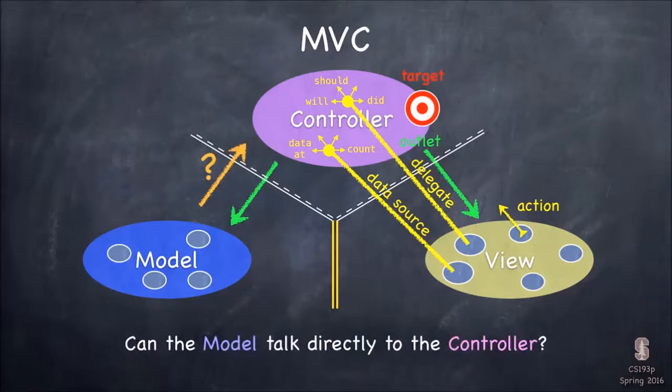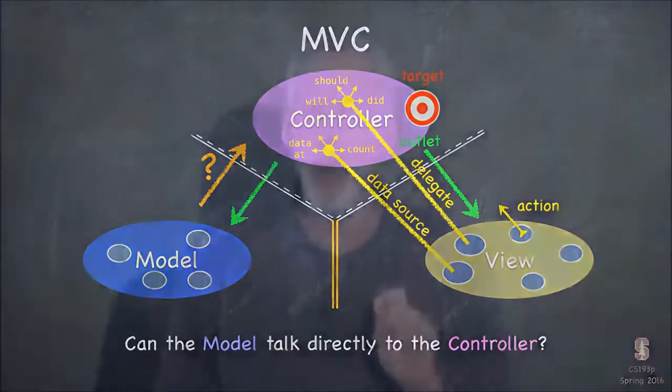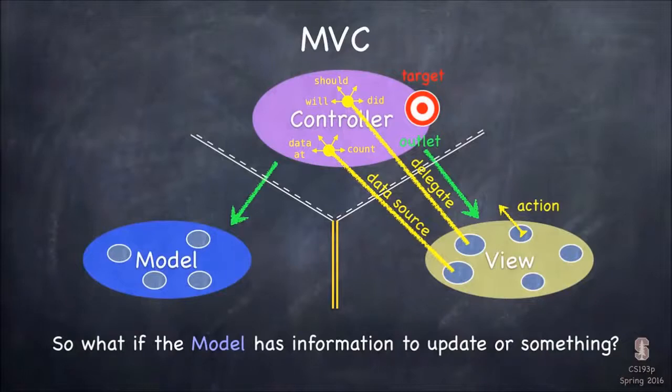How about the model? Can it talk directly to the controller? Absolutely not. Because the controller is your UI logic, and the model is UI independent. So there's absolutely no way the model could have anything to say to the controller. However, what happens if the model, which is UI independent, has some data that changes? So it's maybe the model's representing data on a network, in some ways changing something on the network, and it's changing. How does the model let the controller know?